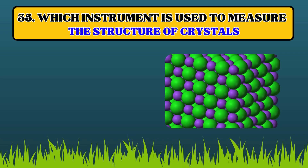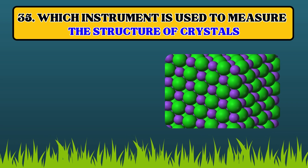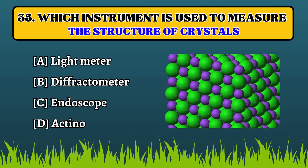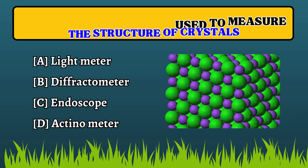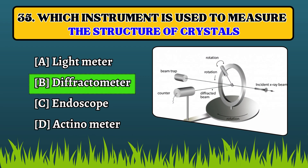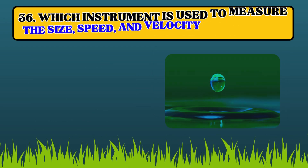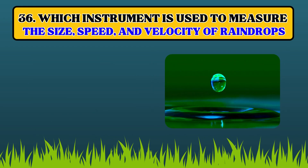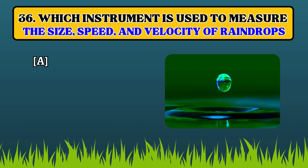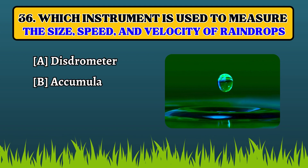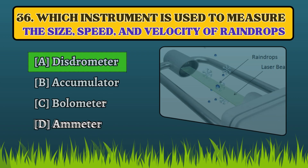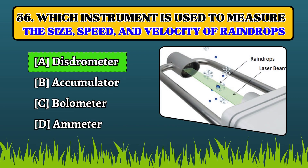Which instrument is used to measure the structure of crystals? Diffractometer. Which instrument is used to measure the size, speed and velocity of rain drops? Disdrometer.